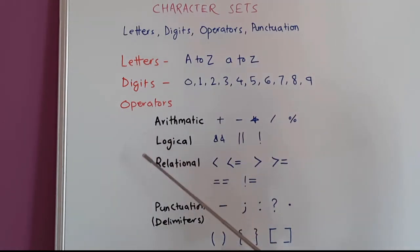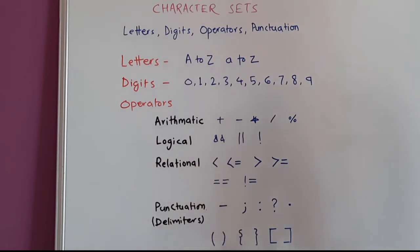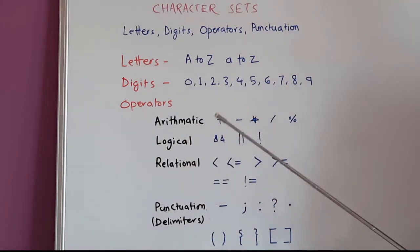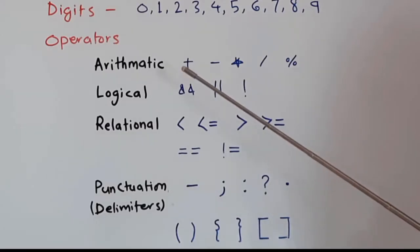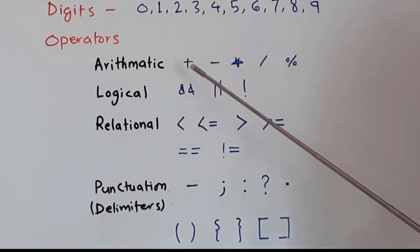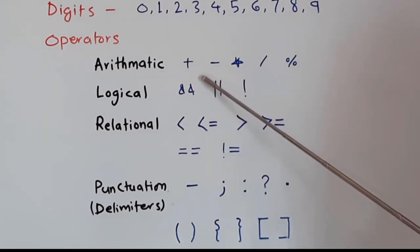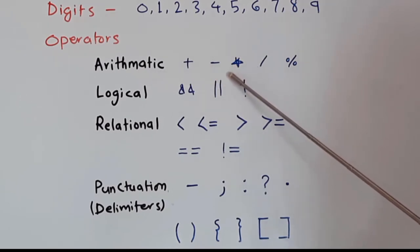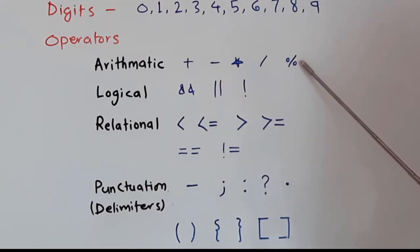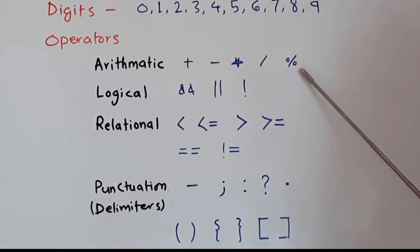Then there are operators: arithmetic, logical, relational, and punctuation marks. Arithmetic operators found on your keyboard are: plus (+) for addition, minus (-) for subtraction, asterisk (*) for multiplication, forward slash (/) for division, and percent (%) as the modulo operator — which gives the remainder of division. Logical operators are: && (AND), || (OR written as two standing lines), and ! (exclamation mark) as NOT.